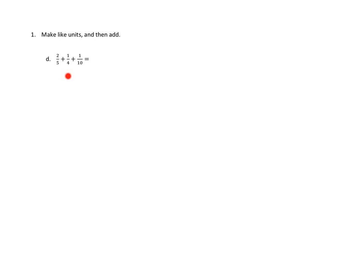And this time we've got fifths, fourths, and tenths. Well, one thing I know for sure is we can't just add across, because these are different units. We can't add apples, oranges, and bananas, and just say it's an apple and janana thing. Okay? So we've got to figure out what the common units are.